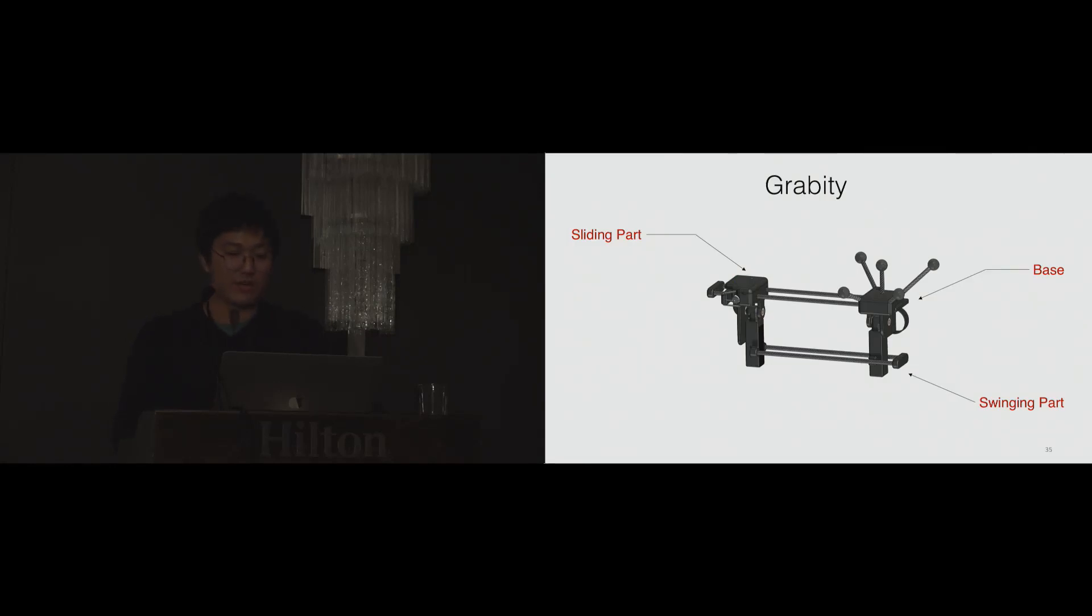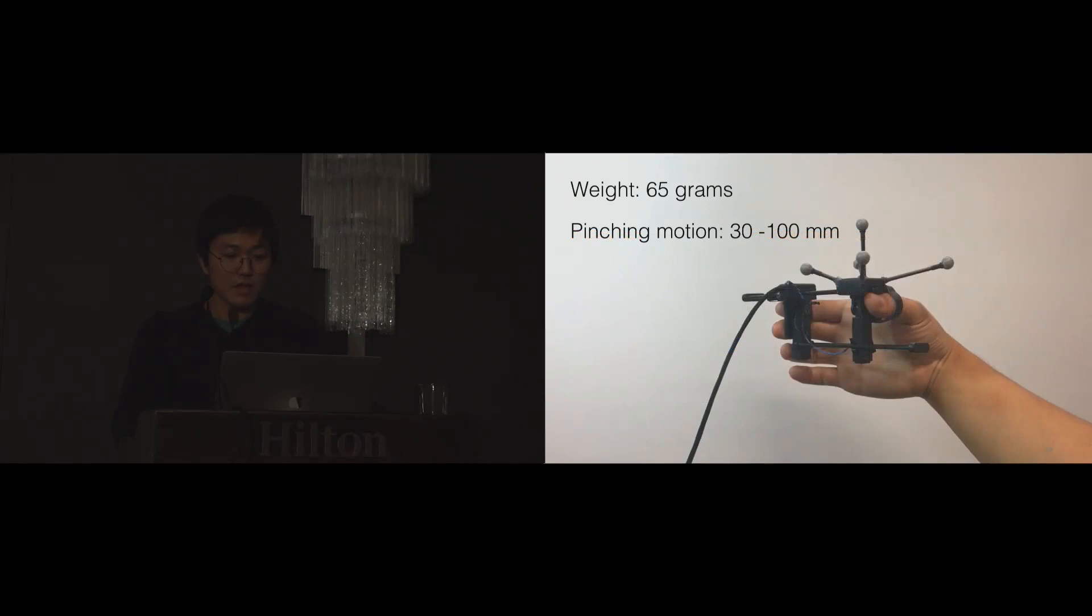Now, let's look at how the device works. There are three main bodies on the device: a sliding part, base, and a swinging part. The index finger and middle finger are mounted on the sliding part, and the thumb is mounted on the base. There are two types of actuators: a unidirectional brake next to the index finger, and two voice coil actuators on the swinging part. The distance between the index finger and thumb is measured with an encoder, and there are retroreflective markers for global position tracking. The device weight is about 65 grams, and the pinching distance is between 30 and 100 millimeters.